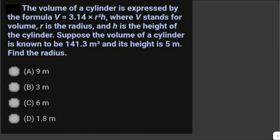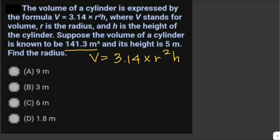The volume of a cylinder is expressed by the formula V equals 3.14 times R squared times H, where V stands for volume, R is the radius, and H is the height of the cylinder. The volume is known to be 141.3 cubic meters and its height is 5 meters. We need to find the radius. We're given the volume and height, and we just have to solve for the radius.